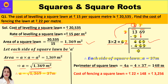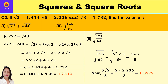Each side of the square lawn is 37 meters. Perimeter of the square lawn = 4a = 4 × 37 = 148 meters. Therefore, cost of fencing the square lawn = 22 × 148 = rupees 3,256. So we found the area, then the side by long division (37 m), then the perimeter, and finally the cost of fencing: rupees 3,256.